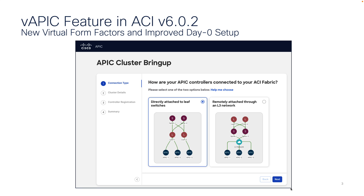The other option — which I'll probably cover in a third video — is what we're calling remotely attached through a layer 3 network. In this option your virtual APICs are deployed on some network a few hops away over a layer 3 network, so they're not directly connected to your environment. As long as we have IP reachability to the spines over that layer 3 network, we can discover the fabric that way. You have one or the other: directly attached or over layer 3. In this setup I'm going to talk about the directly attached method.